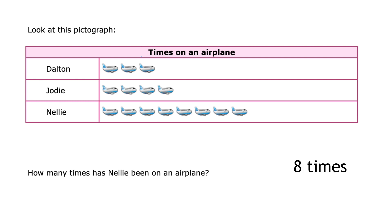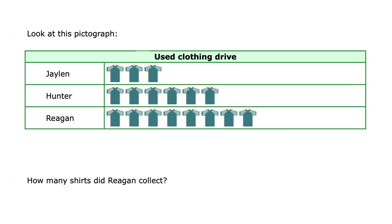If you thought Nellie had been on an airplane eight times, you are correct. There are eight pictures of airplanes in the Nellie section, so she has been on an airplane eight times.